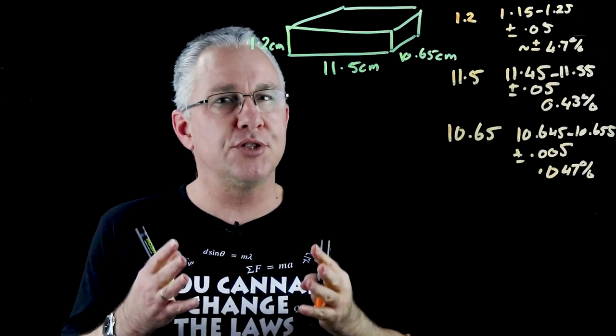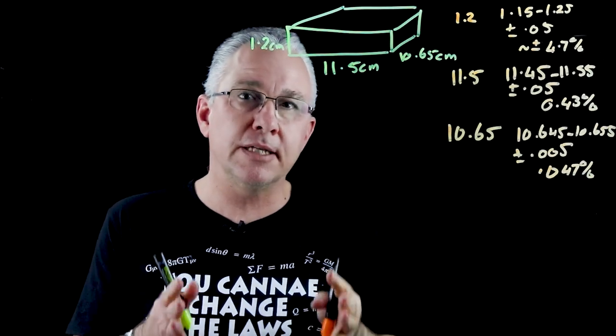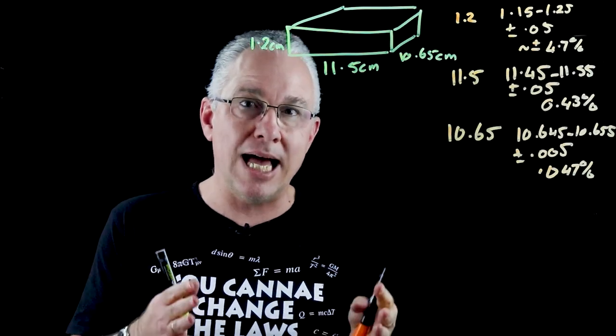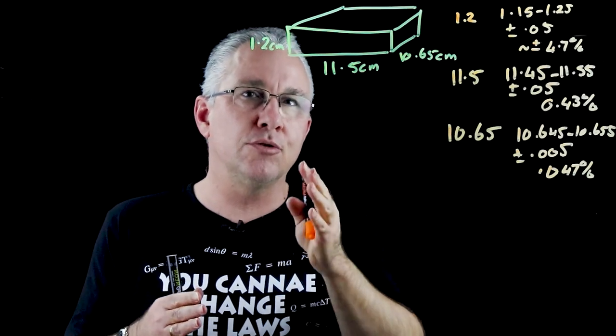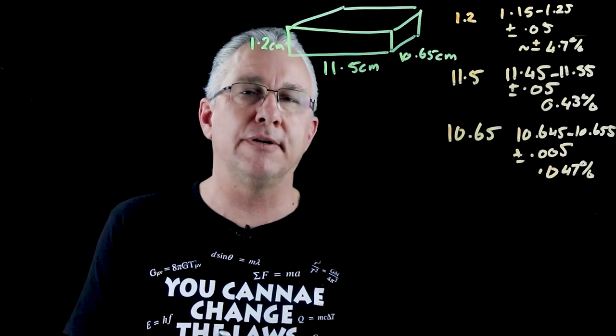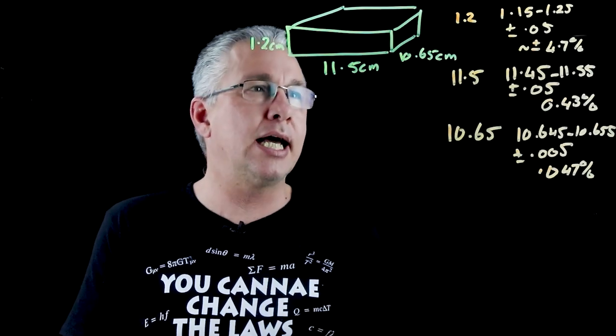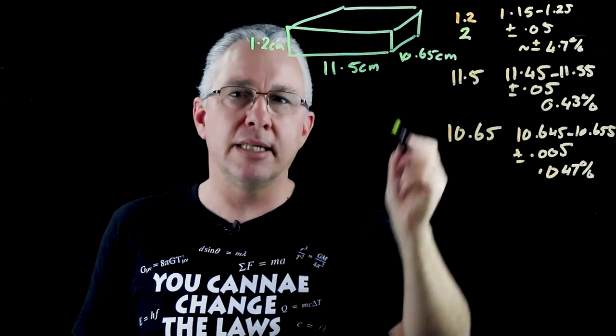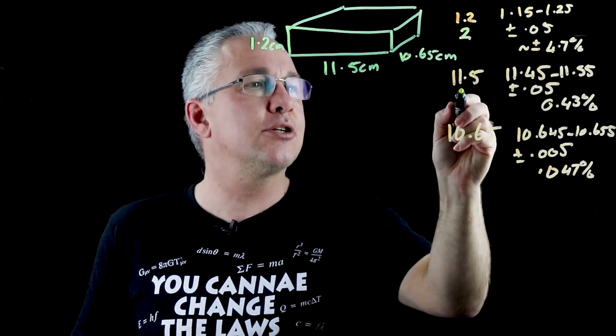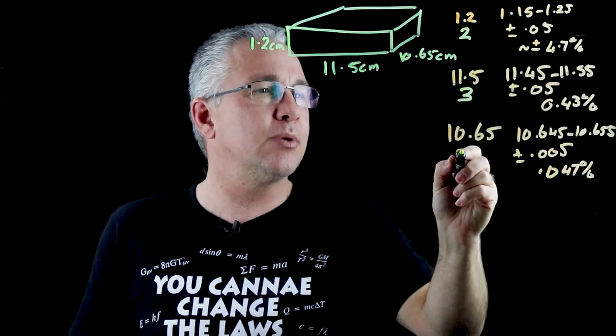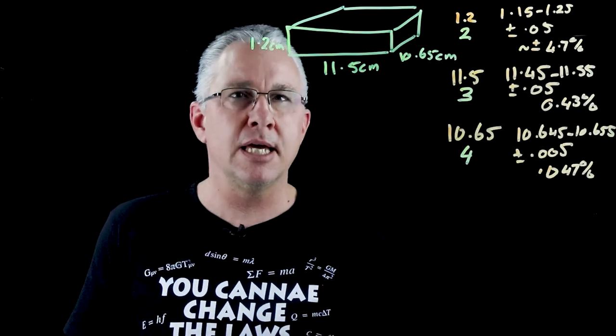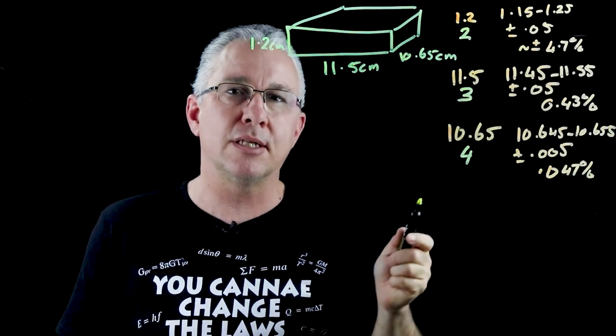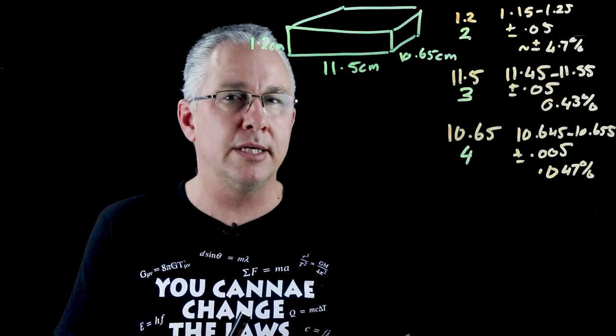So here comes the concept of significant figures. Significant figures tells you the level of precision a certain number has and we look at the numbers to determine what its significance is. So what we say in our case is that this here has two significant figures. It's not many. This one has three significant figures and this one here has four significant figures. And so the levels of significance in terms of the numbers tells us the level of precision that we have in the number.